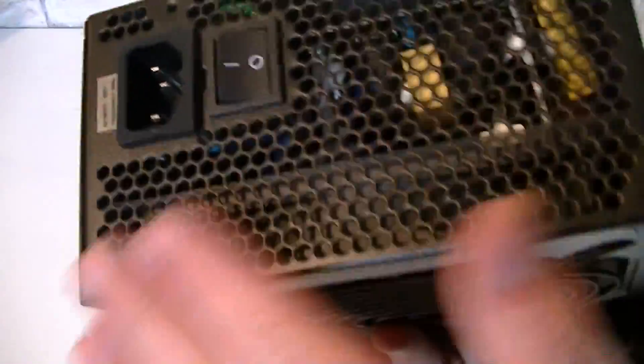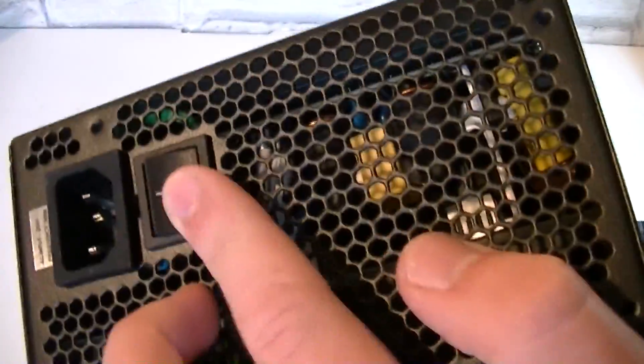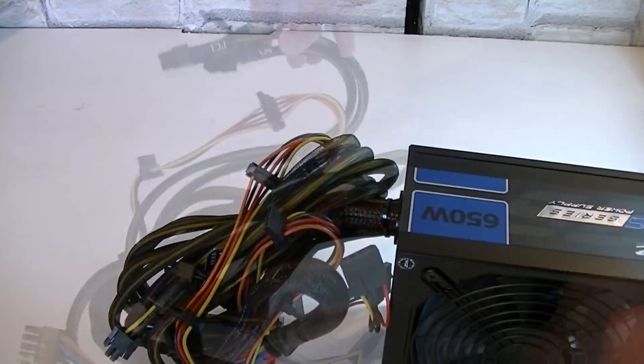This is how the unit looks on this side and on the back there are lots of honeycomb holes for ventilation. This unit comes with a big power switch. I find these pretty good. Now I'll just go ahead and open the wires so we can look at the cables. There we go.